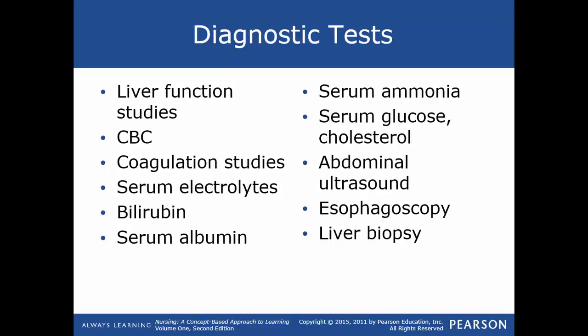Diagnostic tests include liver function tests, which are all increased in cirrhosis. A CBC with platelets will typically show a decrease in hemoglobin and hematocrit. Anemia is related to bone marrow suppression, increased red blood cell destruction, bleeding, and deficiencies in folic acid and vitamin B12. Decreased platelets are related to splenic destruction. Leukopenia — decreased white blood cell count — is related to splenomegaly.